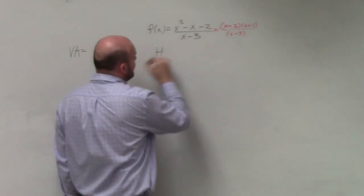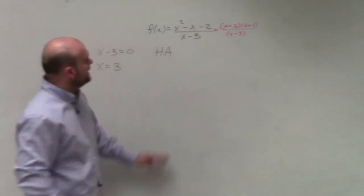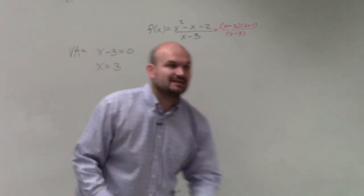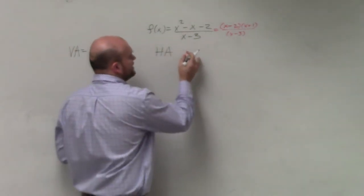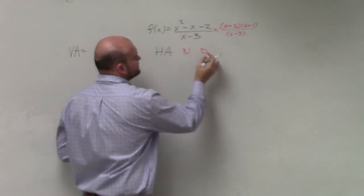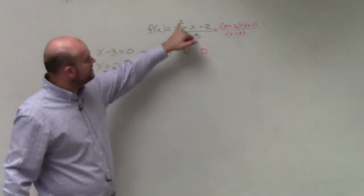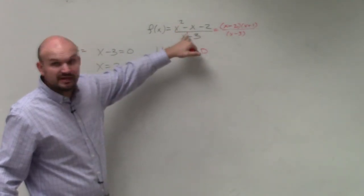Next one, horizontal asymptote. We need to compare the degree in the numerator and the denominator. What you can see is the degree in the numerator is greater than the degree in the denominator.